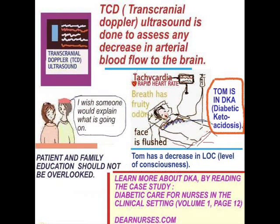Transcranial Doppler ultrasound is done to assess any decrease in arterial blood flow to the brain. From my own experience, I've seen it done after patients have had a subarachnoid hemorrhage. The doctor would order it for three days in a row to assess vasospasm, which is usually brought on by a decrease in blood flow to the brain.